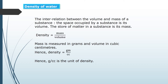Mass is measured in grams and volume in cubic centimeters. Therefore, density is equal to grams per cubic centimeter (g/cc). The unit of density is gram per cubic centimeter, written as g/cc.